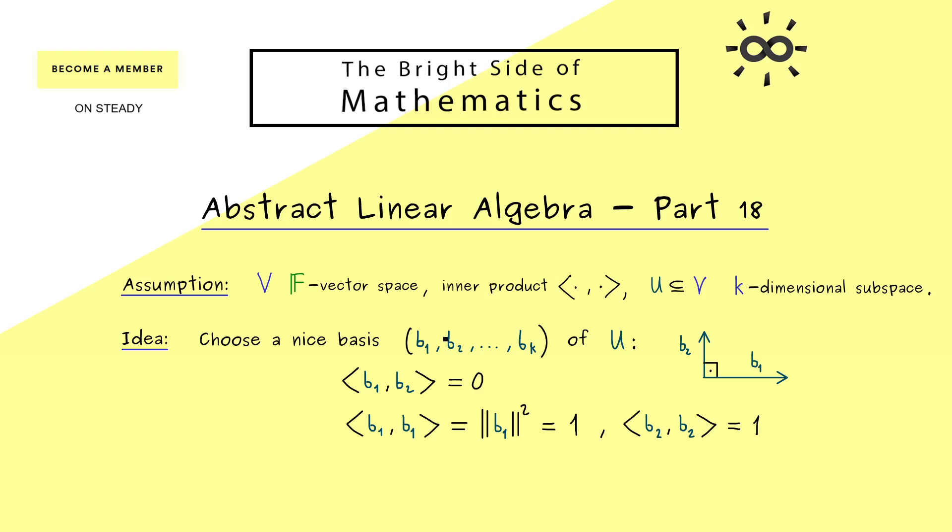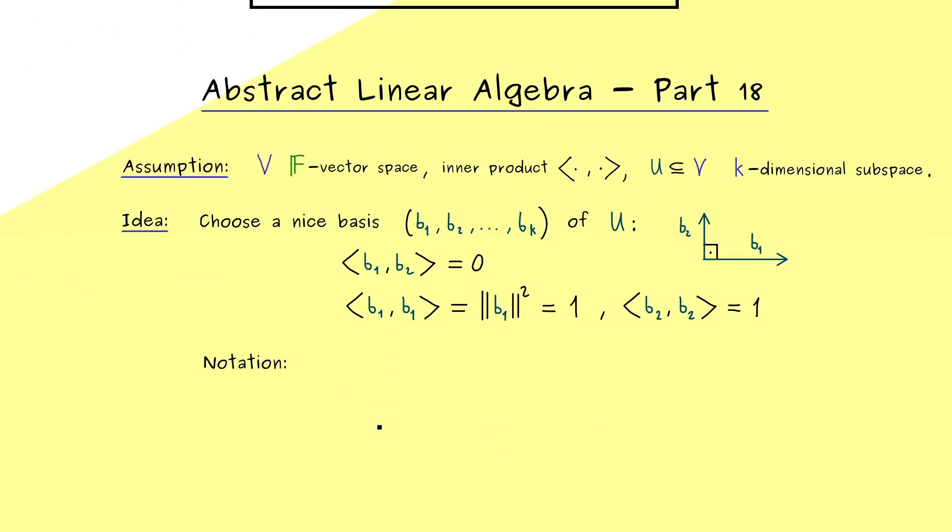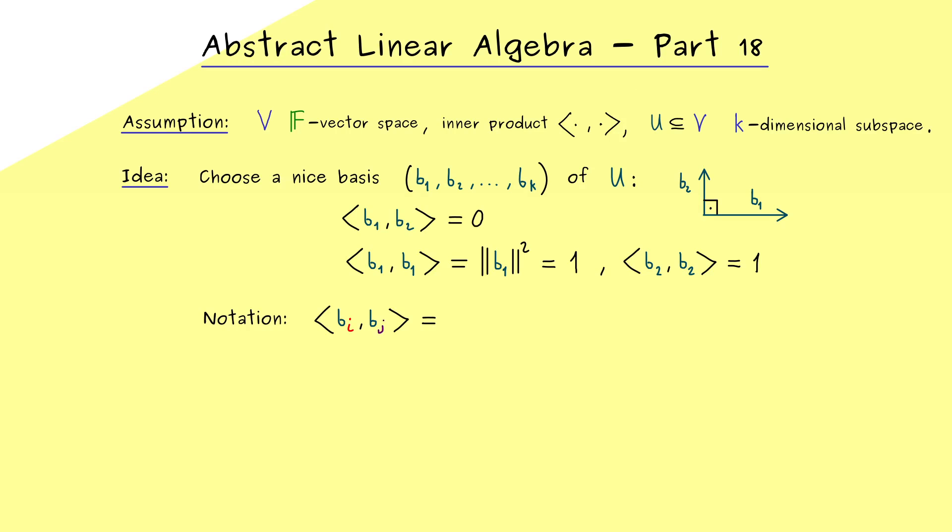And actually we want to have it for all the basis vectors and also this first equation we want to have for all possible combinations. And to put this claim into a formula we have a very helpful notation. We just take indices i and j that go from 1 to k. And then we say that this resulting inner product is equal to the Kronecker delta. And if you don't know the Kronecker delta it's no problem at all, because it's a really simple symbol. It just distinguishes two cases, namely we have 1 or 0. And now you might already know, the first case we have if the indices coincide. And the second case we have if they are actually different. Okay, so there you see, this is the formula we want to have for a nice basis.